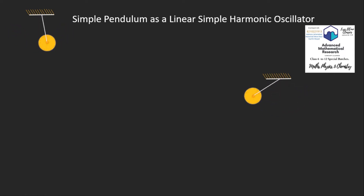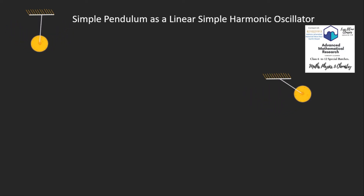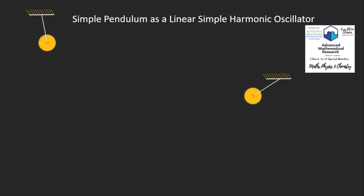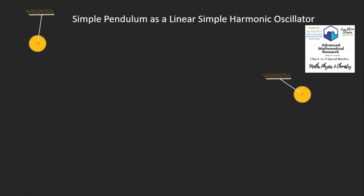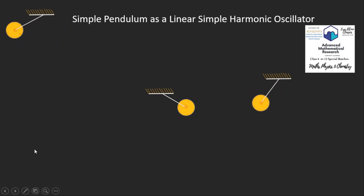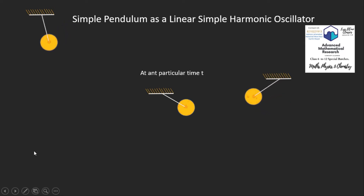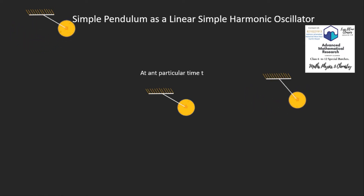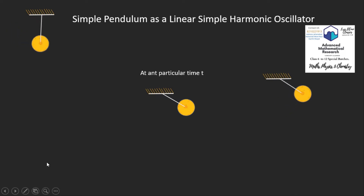Here I have drawn a simple pendulum which is oscillating. In the analysis of oscillation, we consider a particular instant of time — for example, when it is at the right-side extreme point. We take a snapshot at that instant. This can be any general time t.